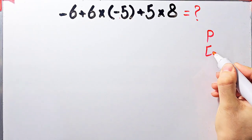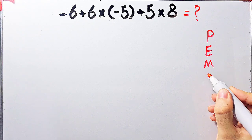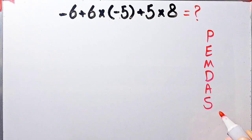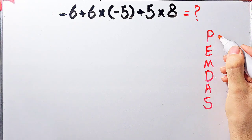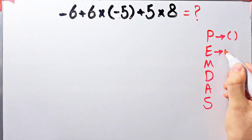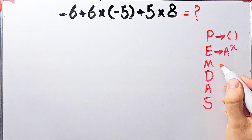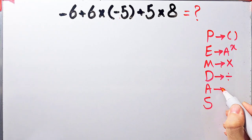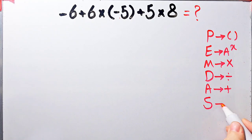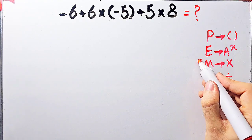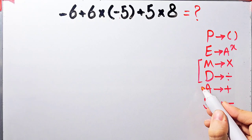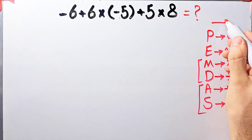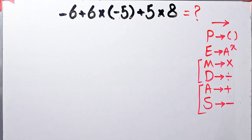To solve this question we need to follow the PEMDAS rule, which determines the priority of mathematical operations. If you don't pay attention to this rule, you get the wrong answer. In this question we have addition and multiplication. Since multiplication has higher priority than addition, we must handle multiplication first.